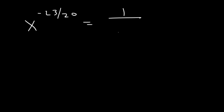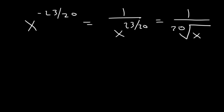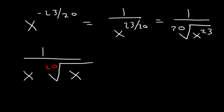So we have x raised to the negative 23/20, which is 1 over x to the 23/20. Converting back to radical form, this is 1 over the 20th root of x to the 23rd. Since 20 goes into 23 one time, we can take out one x, with 3 left over, so this becomes 1 over x times the 20th root of x cubed. If the index is even and you get an odd-exponent variable coming out of the radical, you should enclose it in absolute value. So the final answer is 1 over the absolute value of x times the 20th root of x cubed.